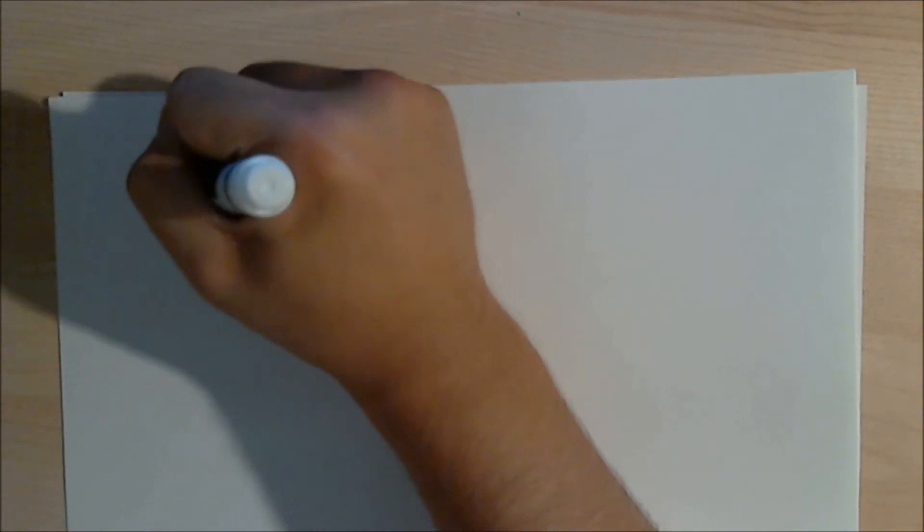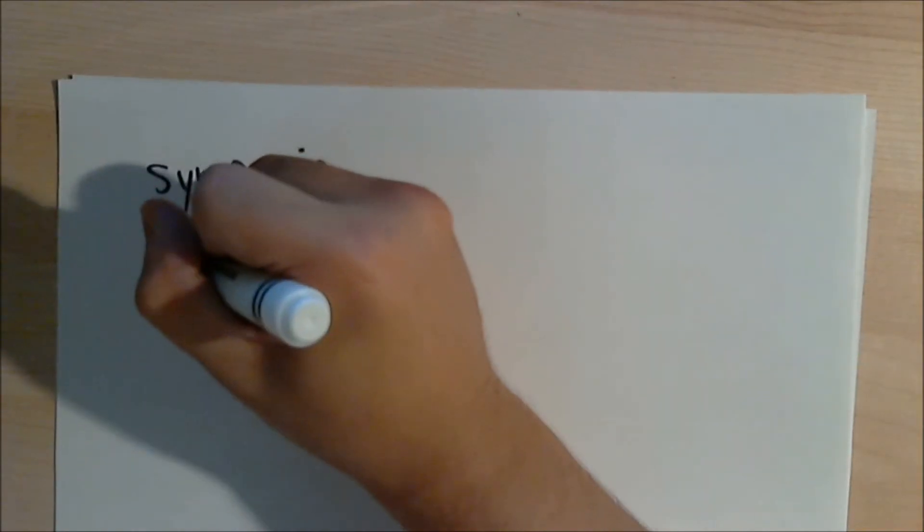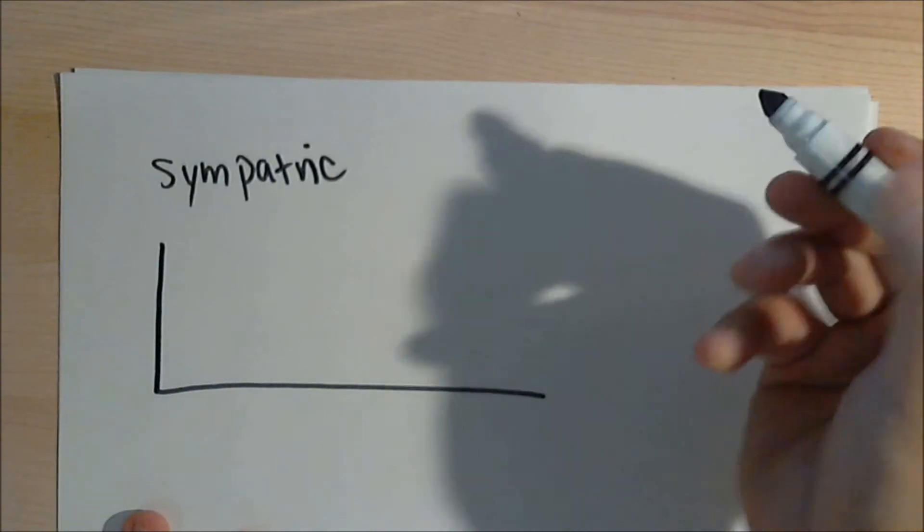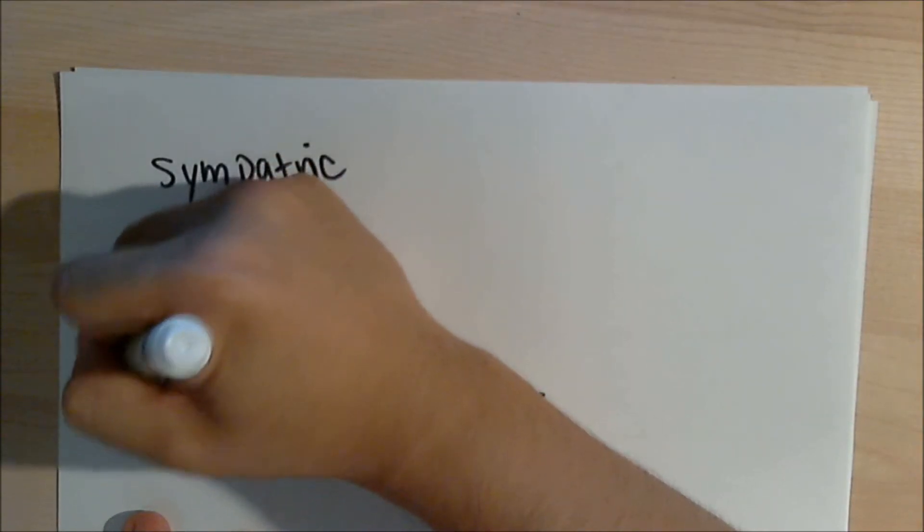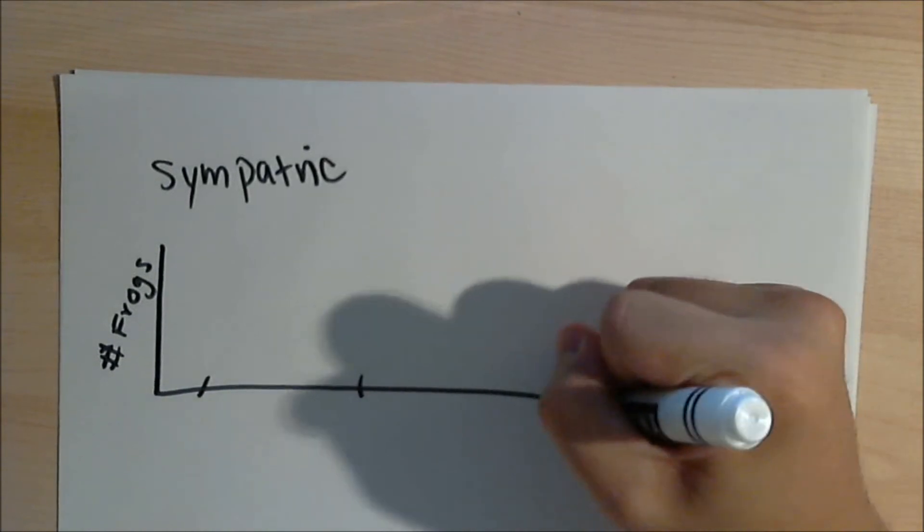Sympatric speciation is when organisms speciate without a geographical separation between them. Let's use an example that I made up. Here's a graph. Let the y-axis represent the number of frogs and let the x-axis be when they mate.